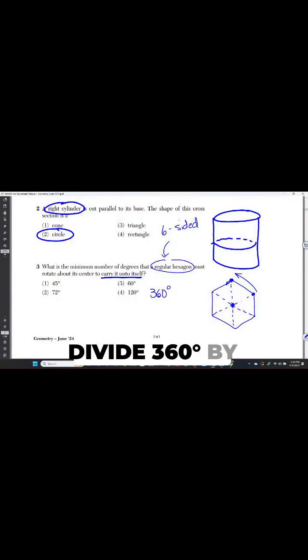I just have to divide 360 degrees by 6, and that will give me the minimum angle of 60 degrees.